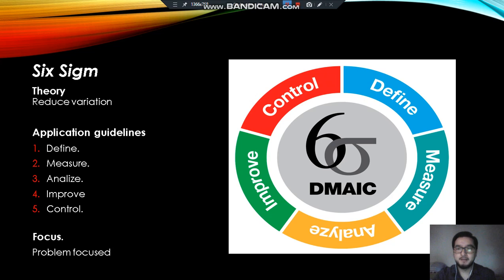Six Sigma: theory — reduce variation. Application guidelines: one, Define; two, Measure; three, Analyze; four, Improve; five, Control. Problem focus: variation.